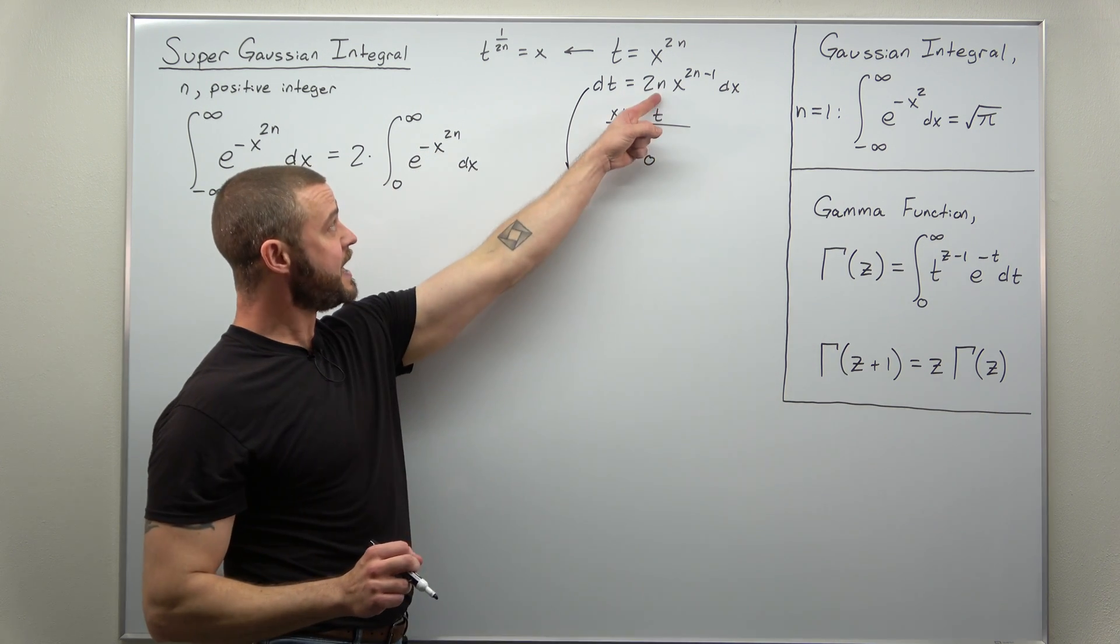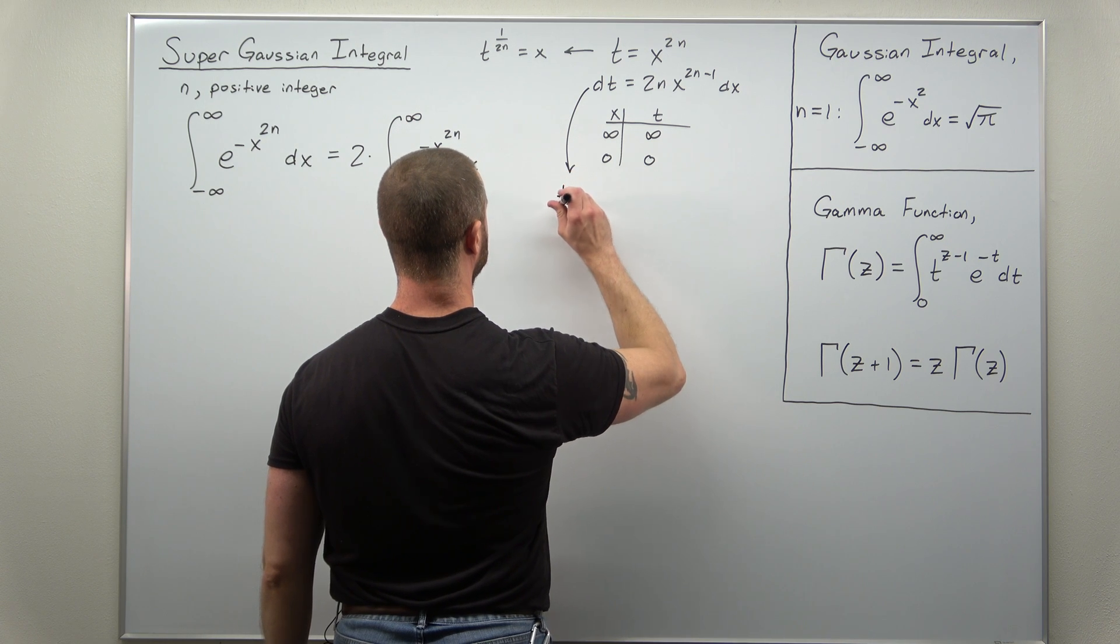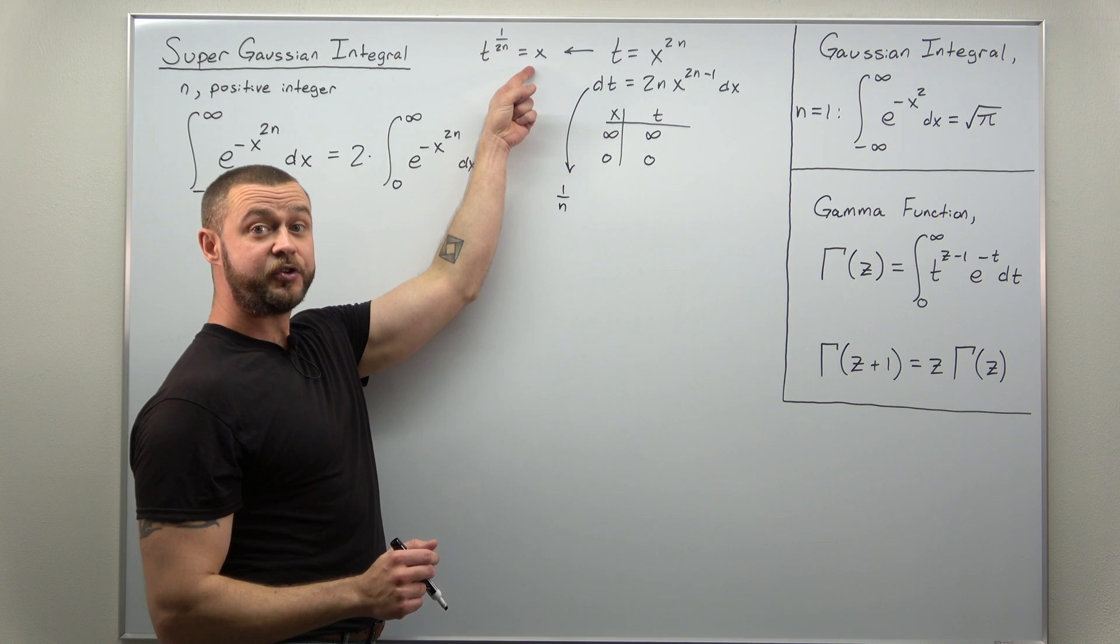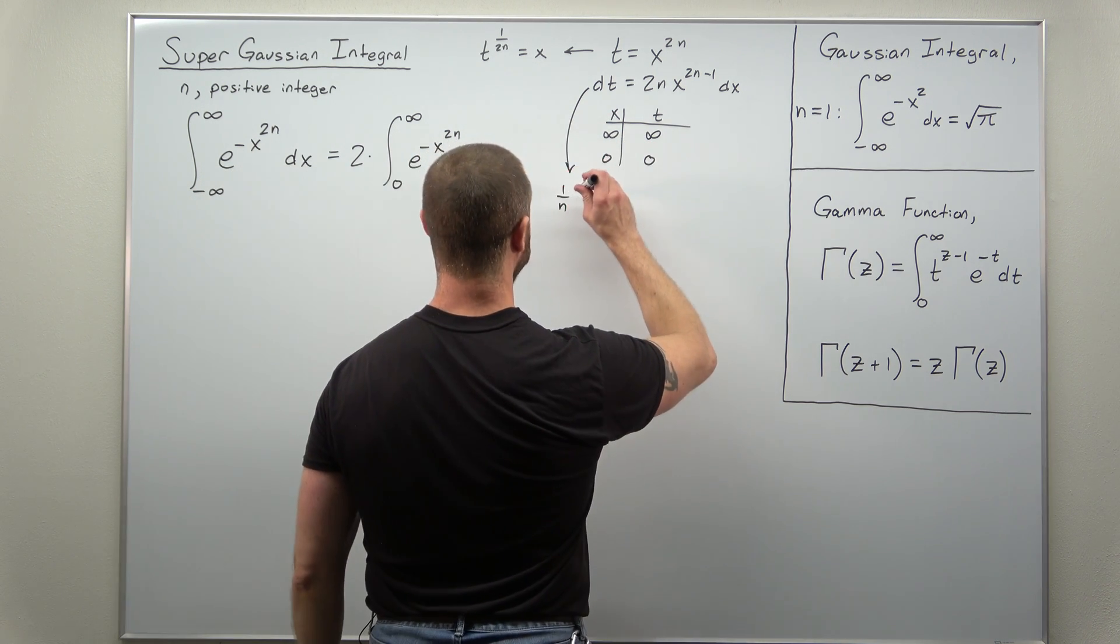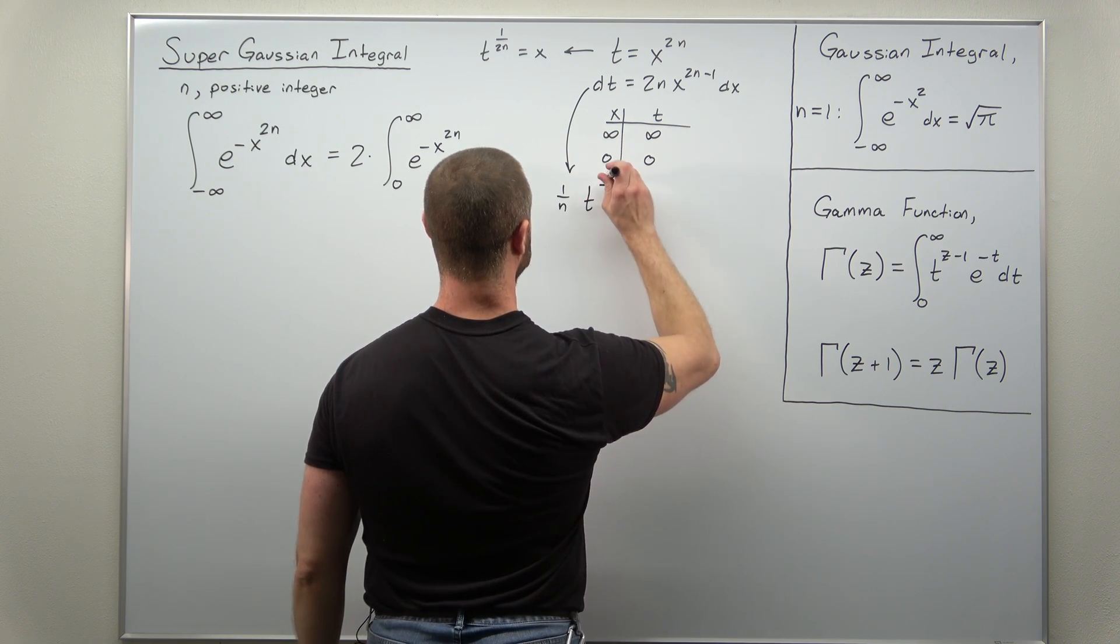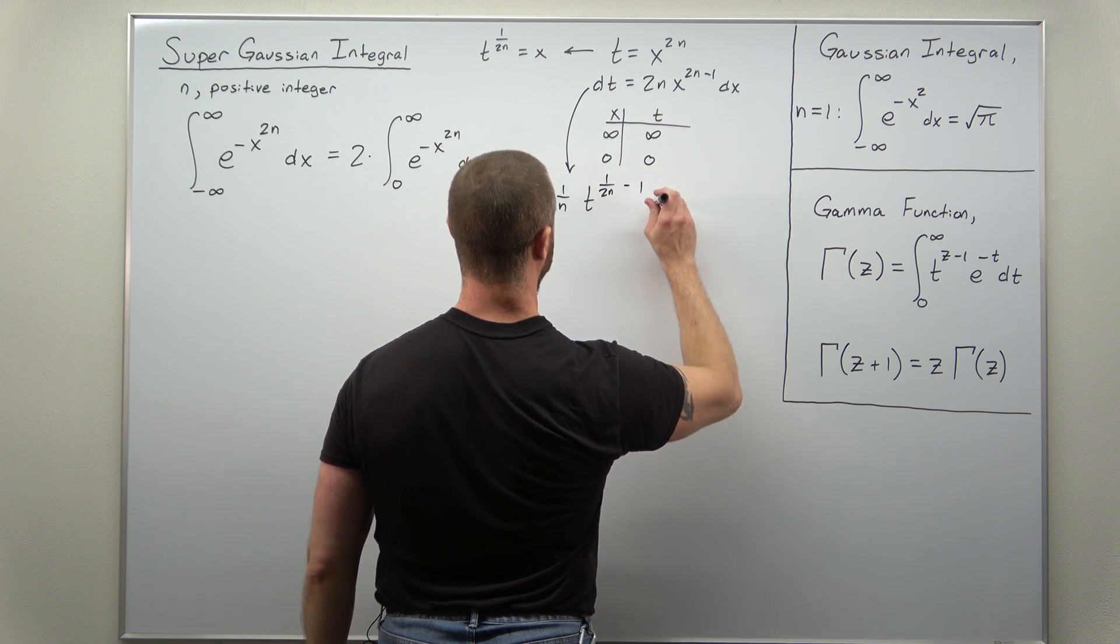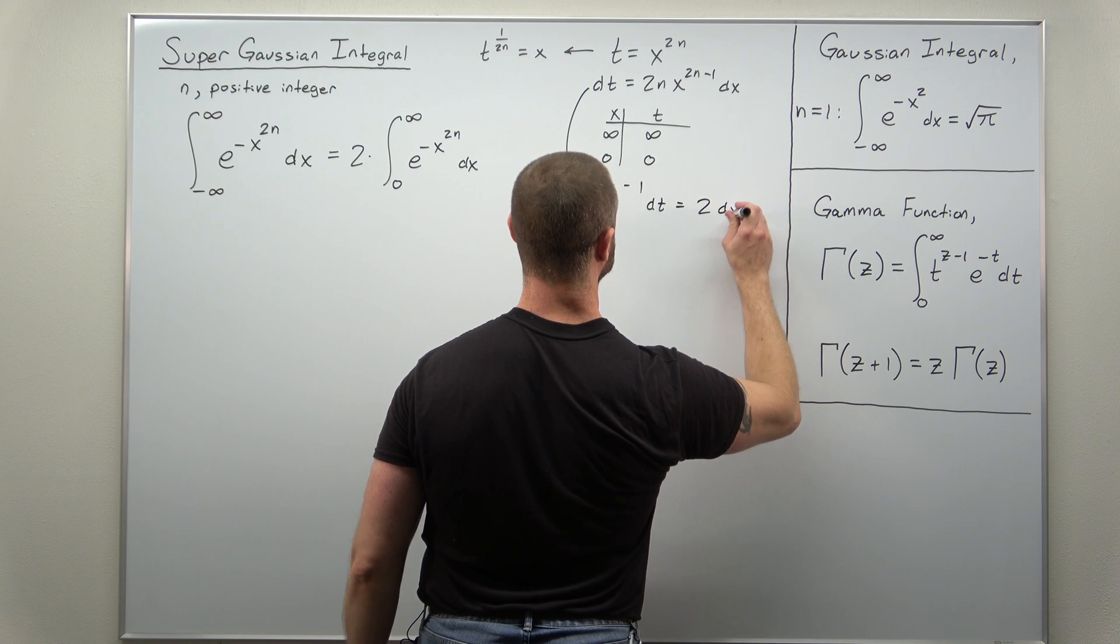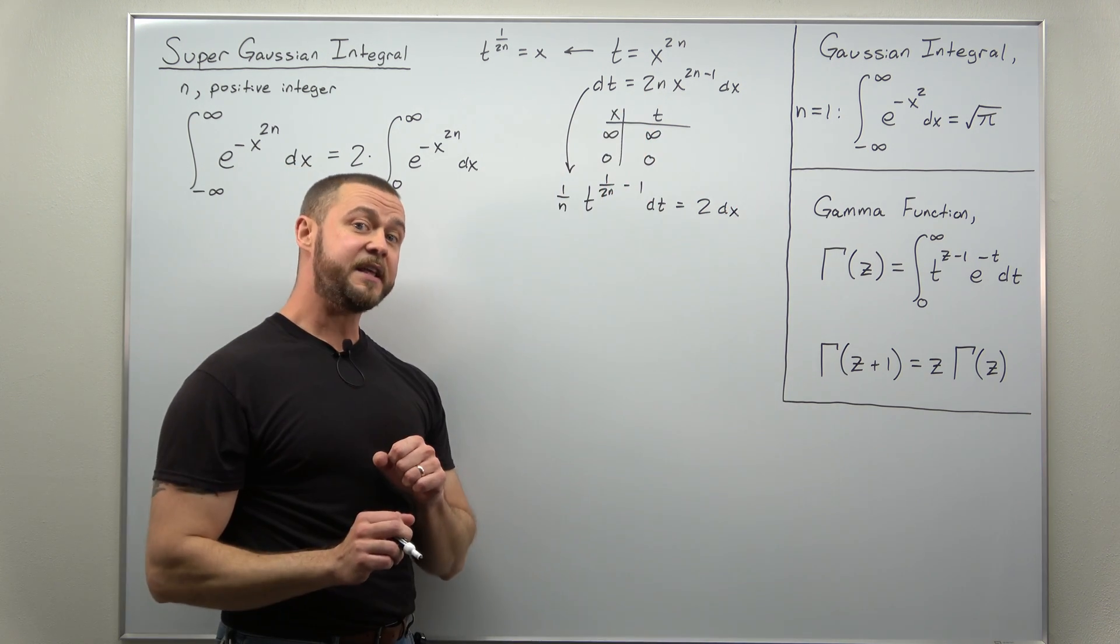We're going to divide the n to the other side to get 1 over n. And again, if you go through some basic algebra, using your substitution solved for x, and being careful with the exponents, you get this as 1 over n times t to the 1 divided by 2n minus 1, dt equals 2dx. And we're going to keep that factor of 2 on the dx side.